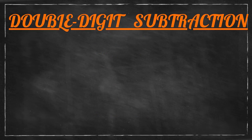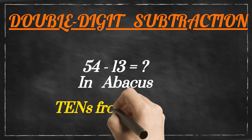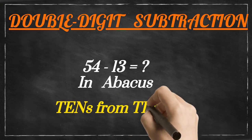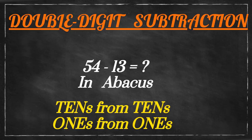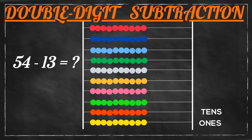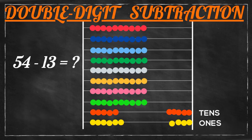Now let's try double digit subtraction: 54 minus 13. We have to subtract the tens from the tens and ones from the ones. At the tens place we will put five and at the ones place we will put four to represent 54, then subtract 13 from it.